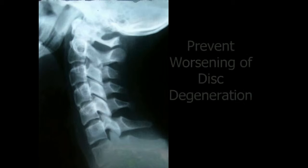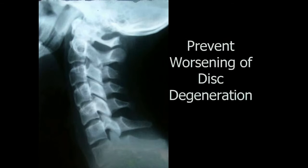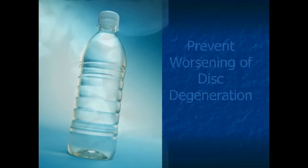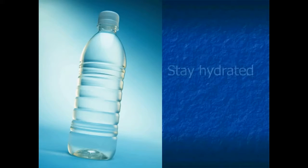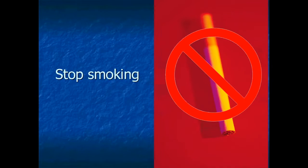If you have mild or moderate disc degeneration, it's important to prevent that degeneration from advancing into a severe condition. Discs function best when they are well hydrated, so drinking plenty of water can maintain disc health. Smoking has shown to be a significant factor in a decrease in disc health, so reducing or quitting smoking is also beneficial.